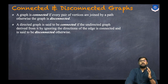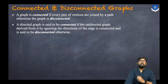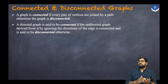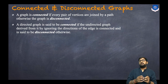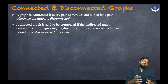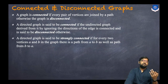Now let us come to directed graphs. A directed graph is said to be connected if the undirected graph derived from it by ignoring the directions of the edges is connected, and is said to be disconnected otherwise. So a directed graph is connected when, if we ignore the directions to get a normal undirected graph, that graph is connected.